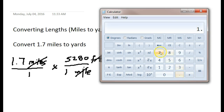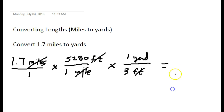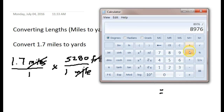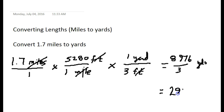On top I have 1.7 times 5,280, which equals 8,976. On the bottom I have one times one times three, which is three. So 8,976 divided by 3 equals 2,992 yards. Converting 1.7 miles to yards gives us 2,992 yards.